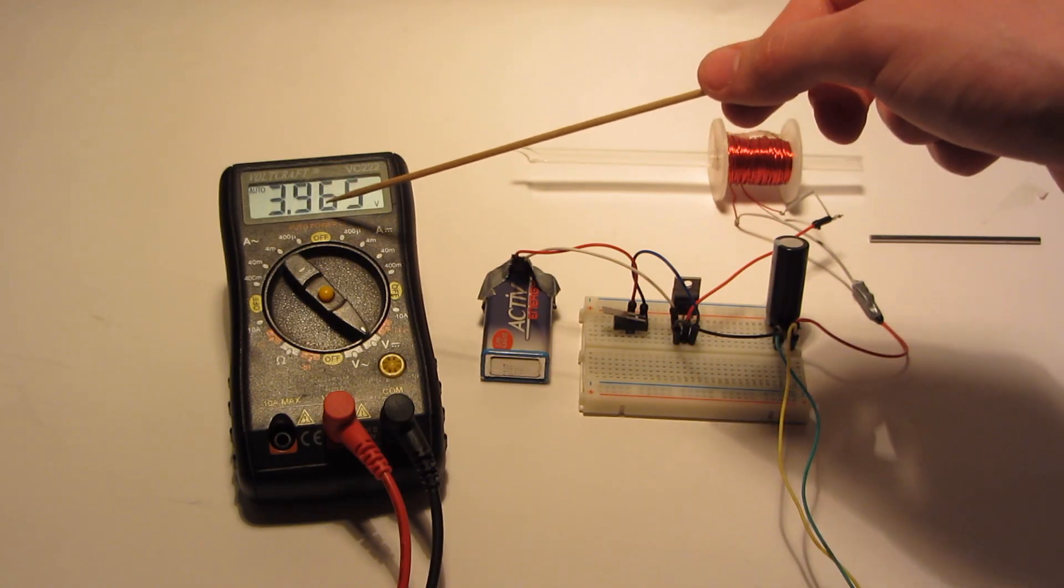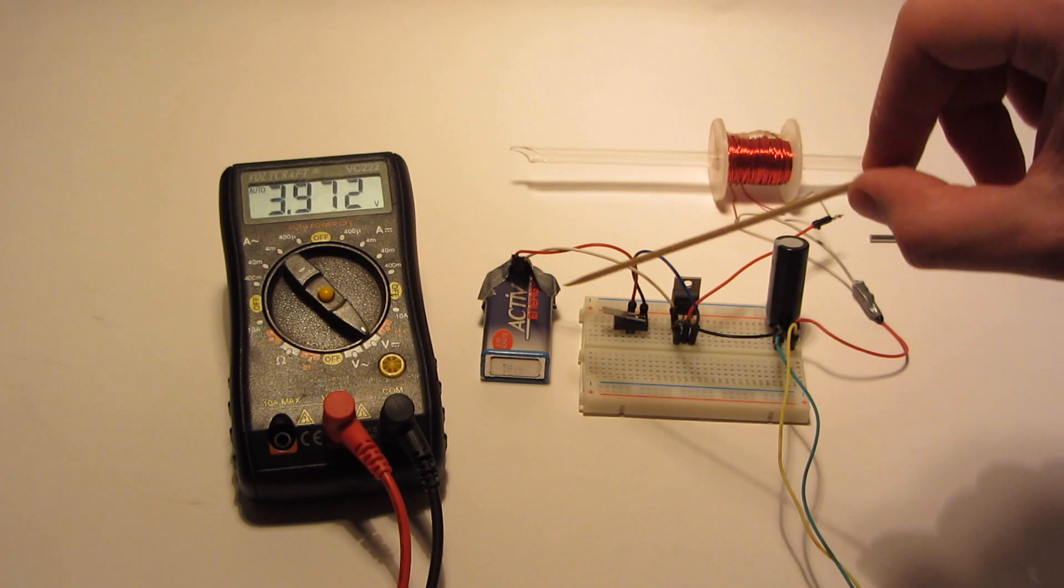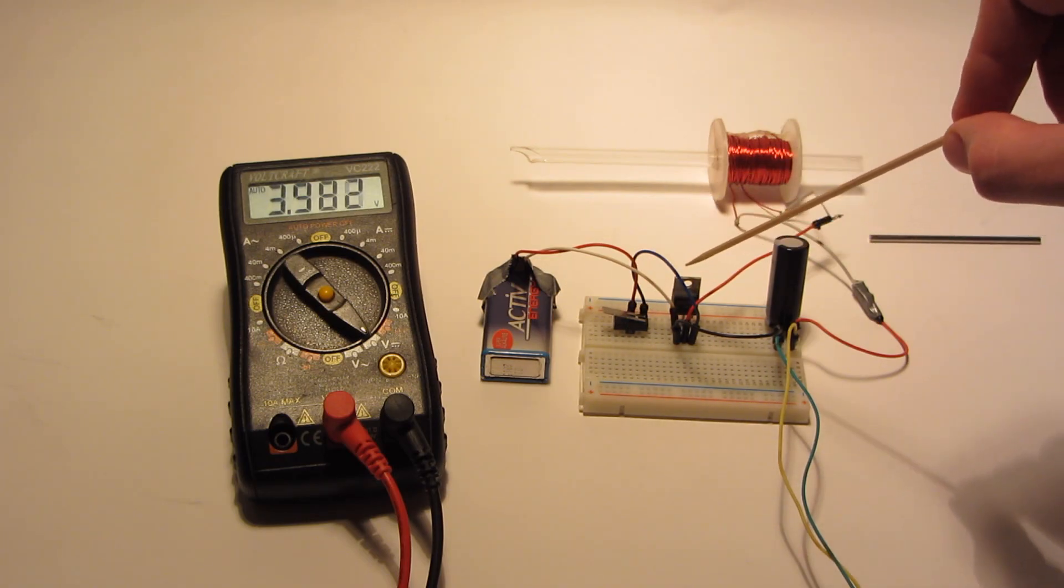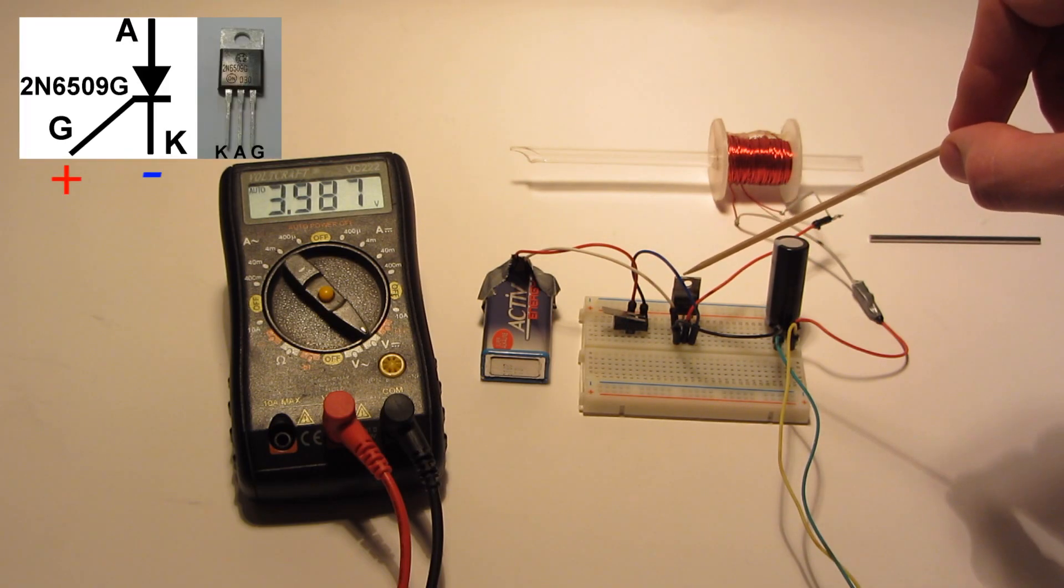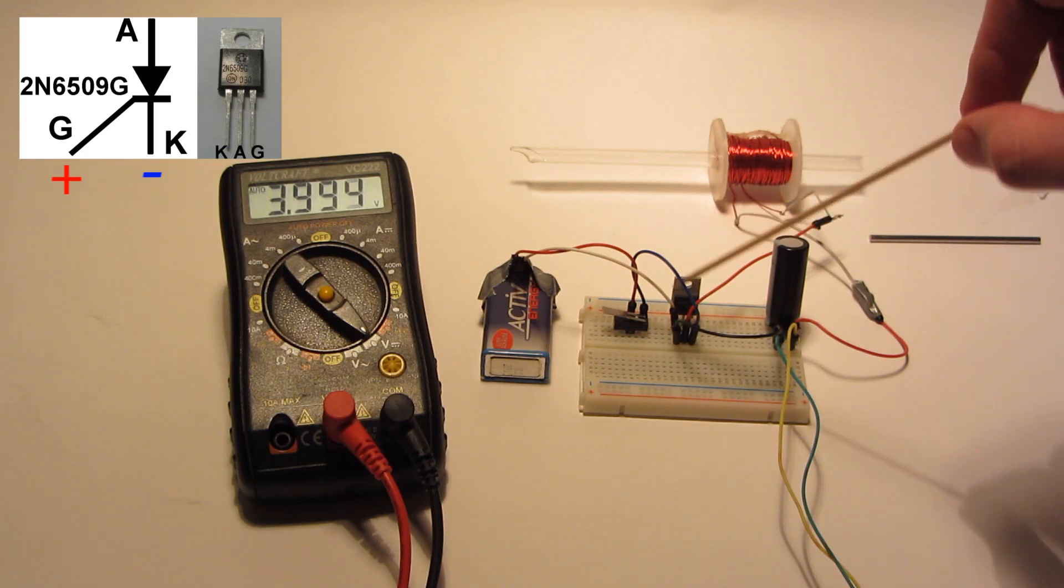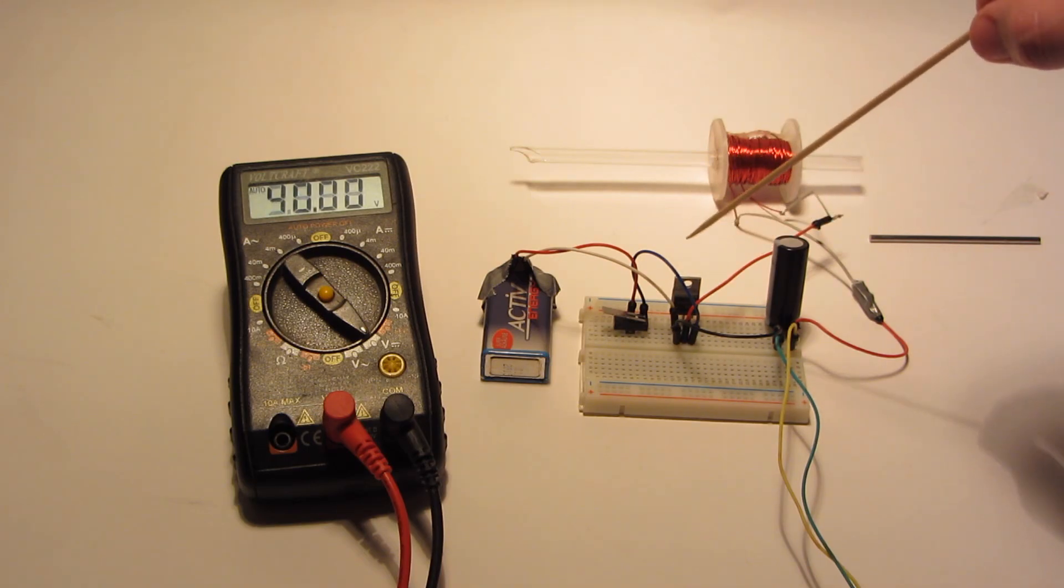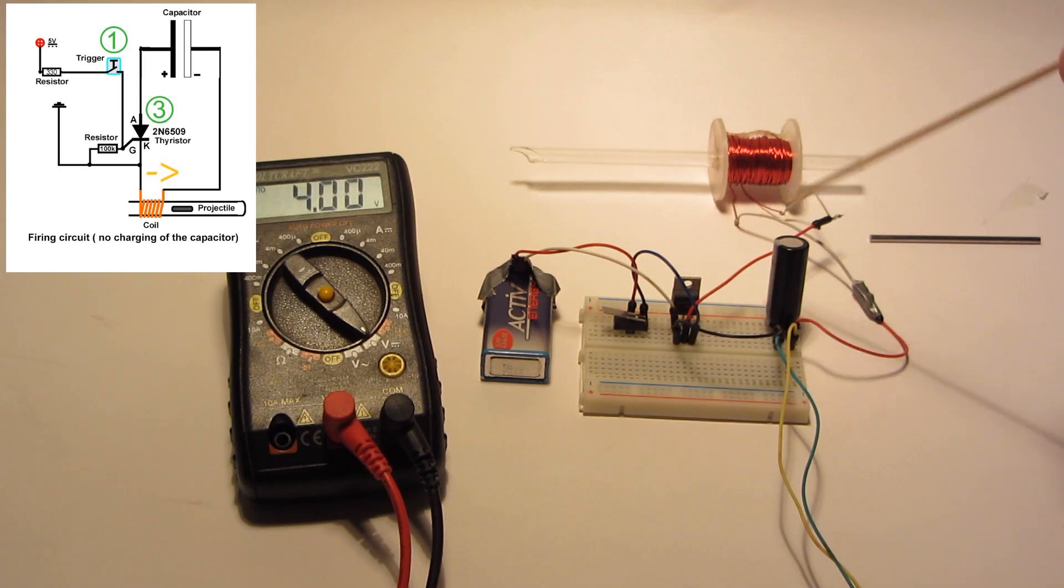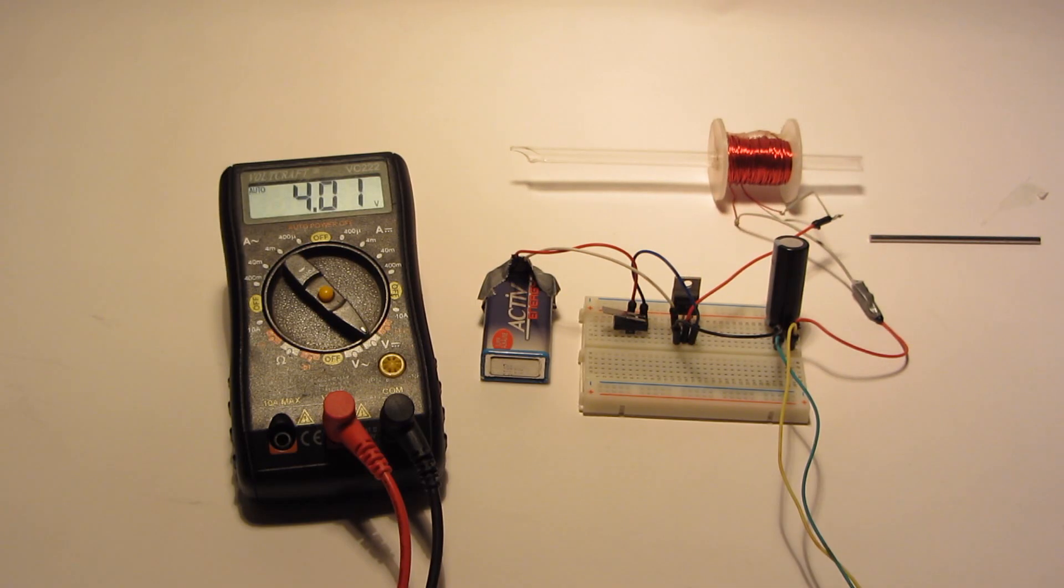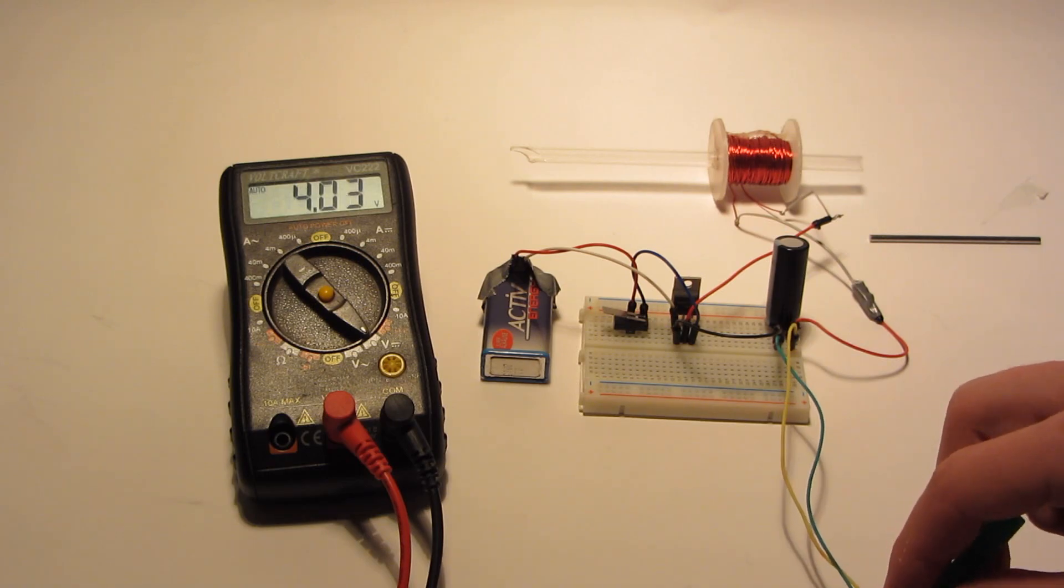How does it work? The switch triggers a little current through the gate of the thyristor, and the gate current triggers the big current from the anode to the cathode through the coil. Now let's charge the capacitor.